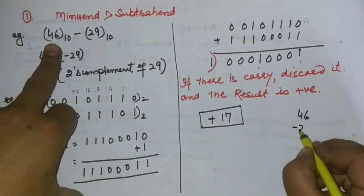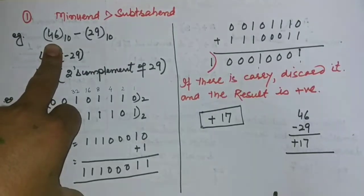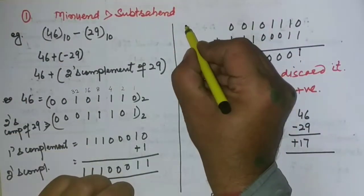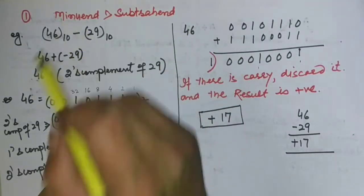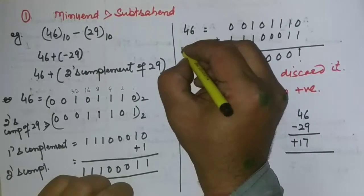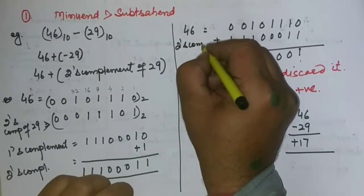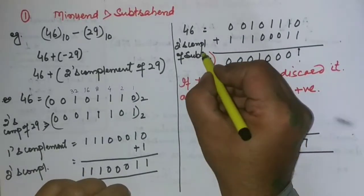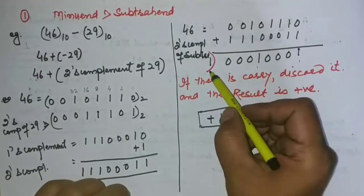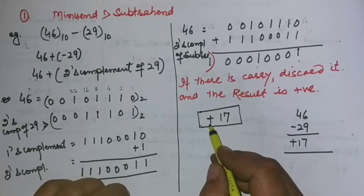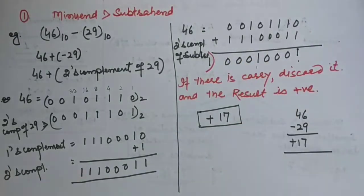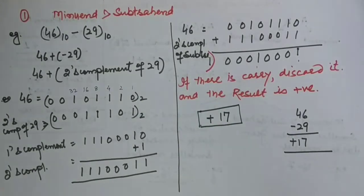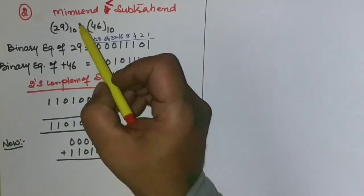After discarding the carry, the 8-bit result is positive. This was 46 as the minuend and the two's complement of the subtrahend 29. We added them, discarded the carry, and the result is positive. Converting the binary result to its decimal equivalent gives us 17, which is correct since 46 minus 29 equals 17.